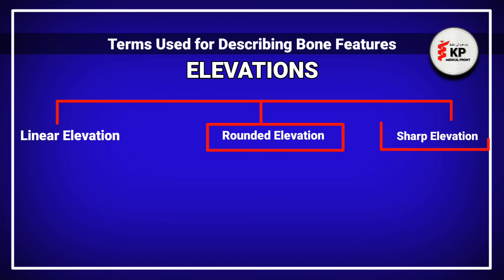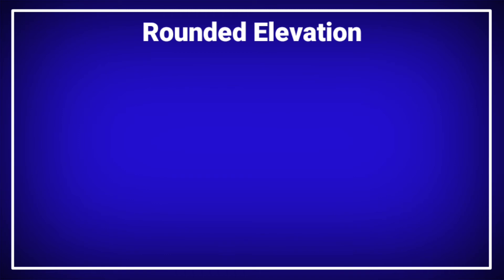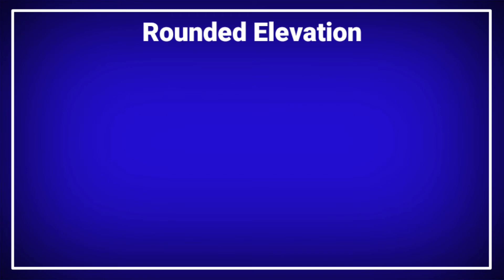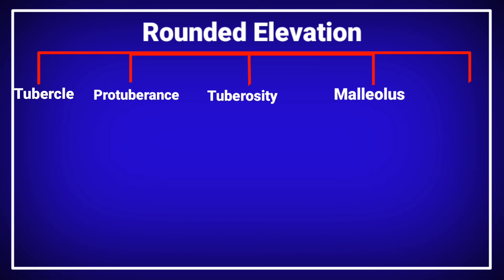Today we will discuss the other two types of elevation: the rounded elevation and the sharp elevation. Unlike the linear elevation, the rounded elevation is restricted to a single point. The elevated part is a round, knob-like structure, as shown in the diagram. In the human body, the rounded elevation is described by different names in different parts of the body: tubercle, protuberance, tuberosity, malleolus, and trochanter.